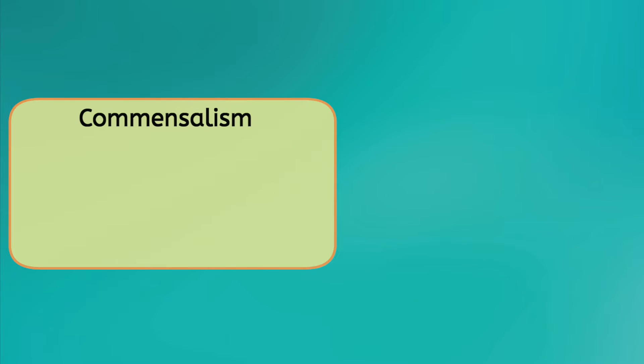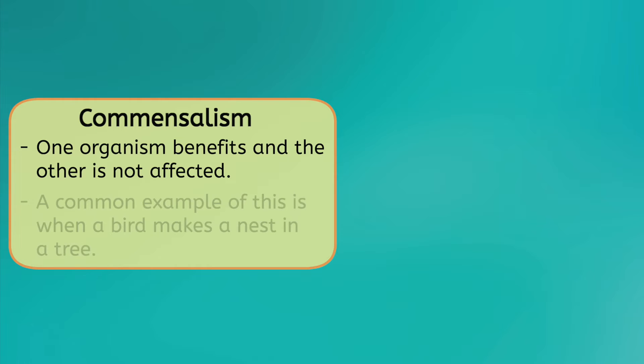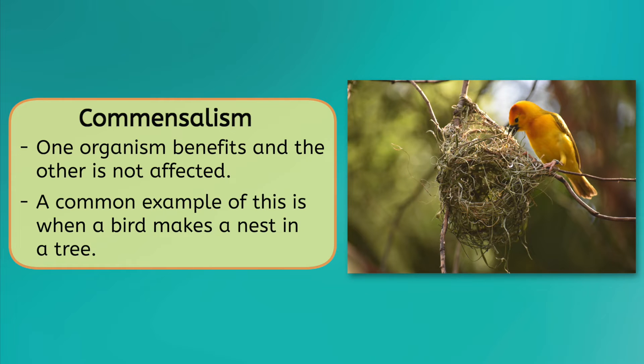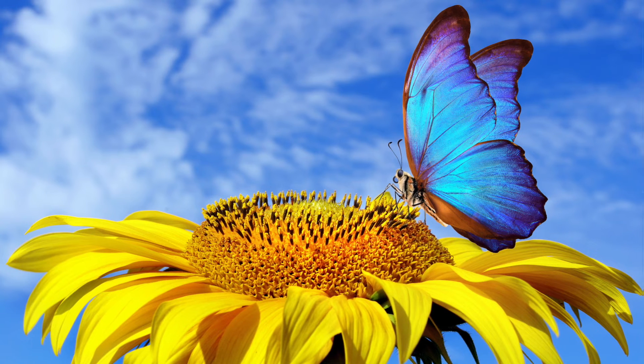On the other hand, there is mutualism, which is when both organisms benefit from the exchange. One example of this is the relationship between the oxpecker and large mammals like the antelope. The oxpecker feeds on parasites on the antelope's body, such as ticks and flies. The oxpecker gets food, and the antelope rids itself of pests — a win-win! Finally, there's commensalism, where one organism benefits and the other is not affected. A common example is when a bird makes a nest in a tree: the bird benefits by obtaining shelter, and the tree is not affected. A butterfly obtains nutrients from the plant's nectar, and the plant is able to spread its pollen to other plants — that's mutualism!